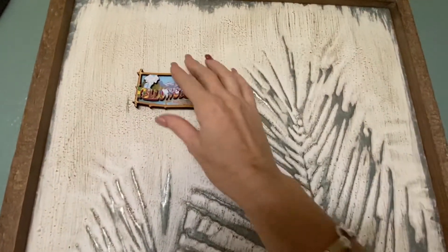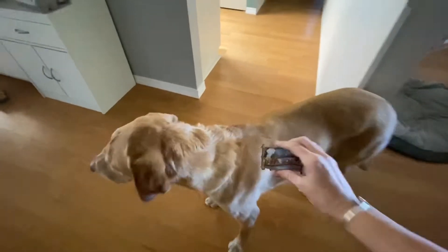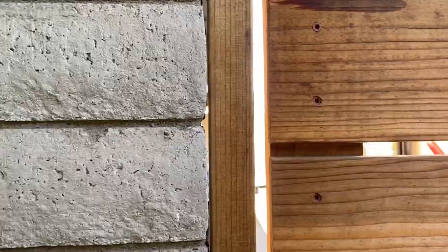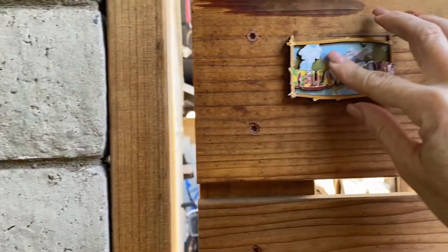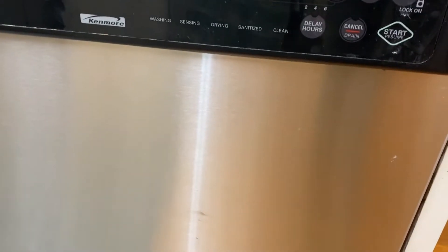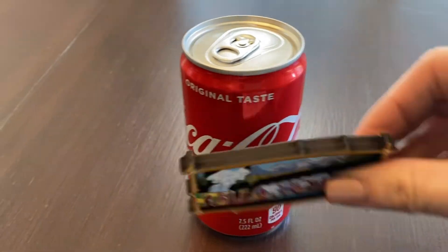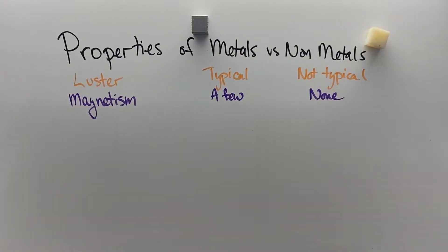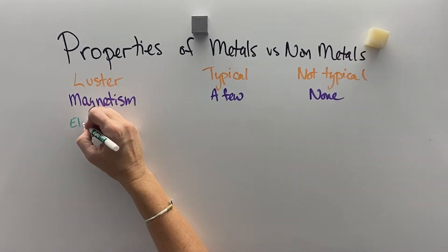Magnetism is another thing that we typically think about when we think of metals. This metal sign is magnetic, but my dog is not. These bricks are not responding to a magnet, but the fireplace is. This bone isn't, neither is the glass, but the metal door does. Both of these exterior building materials do not, neither does the plastic slide. The dishwasher, which is metal, and the soda can don't either. So while we typically think of metals as being magnetic, just a few actually are, and non-metals pretty much never are.